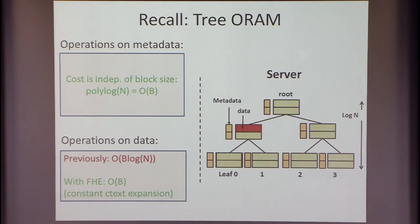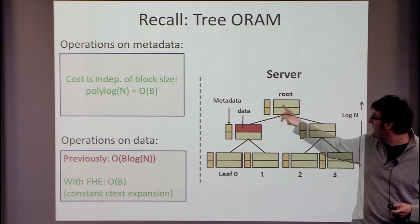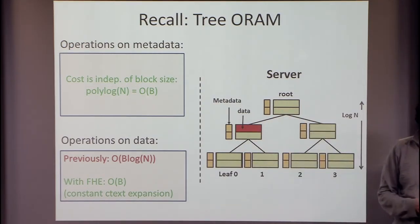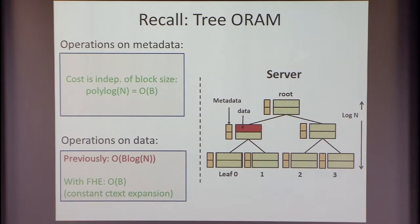The log N previously was because it was a path — to read a block, I needed to hide which one I'm reading, so I needed to read the whole path. The question about recursion: the other trees are storing addresses, so the whole recursion is independent of the block size. I think of that as metadata — all the other trees are metadata. Only the top tree's data matters. So with FHE, this can be just on the order of the block size.